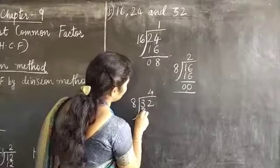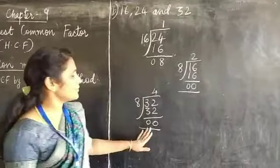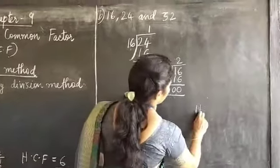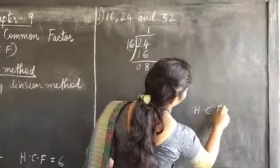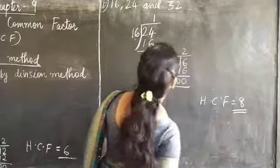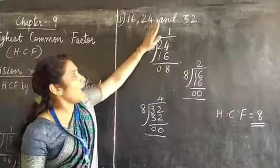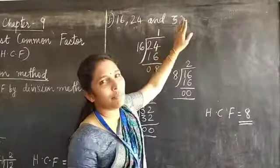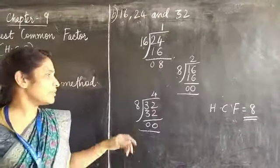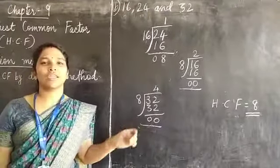32 divided by 8. 8 fours are 32. Yes, we got the same, remainder 0 here. So HCF is equal to 8. We can divide 16, 24, and 32 by 8 without leaving a remainder. Hope you all understood the division method. Thank you.